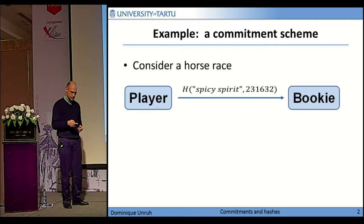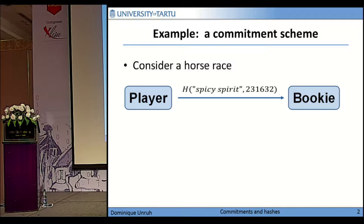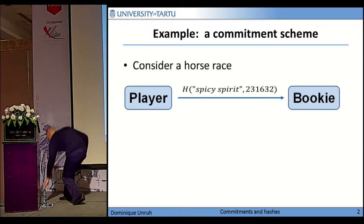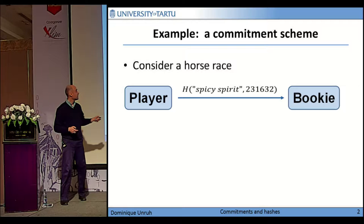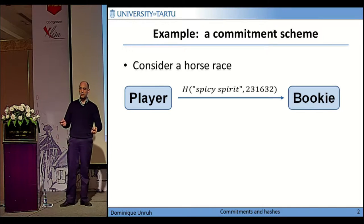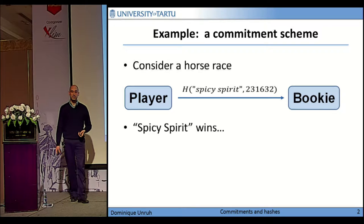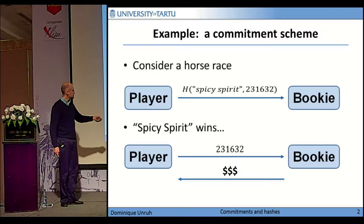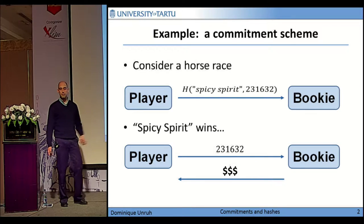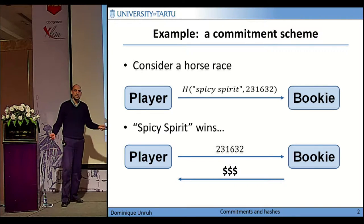And how can we do that? For example, we could take the name of the horse — 'Spicy Spirit' in this example — and take a hash of that name together with some randomness, and send this both together to the bookie. And now let's say Spicy Spirit is the horse that wins. What does the player do? He sends the randomness to the bookie. The bookie checks whether the name of the horse together with the randomness gives the right hash, and if so, pays the money.